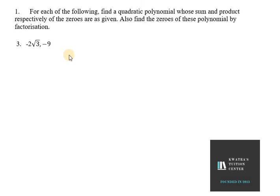Hello everyone, let's start with third part of question number one, exercise 2.4, NCERT example. In this case we need to find a quadratic polynomial whose sum and product is given. Sum of zeros is minus 2√3, so α + β = -2√3, and α·β = -9.